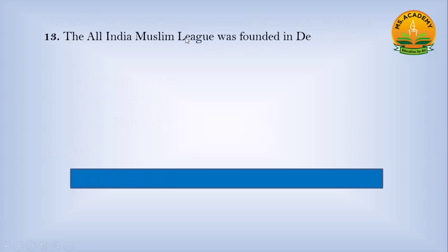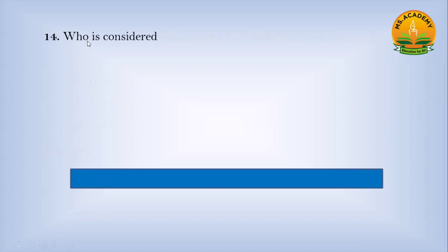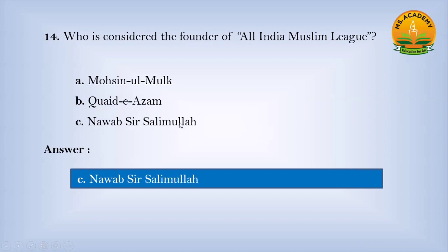The All India Muslim League was founded in December: Option A, 1908; Option B, 1913; Option C, 1906. Who is considered the founder of the All India Muslim League? Option A, Muslim Mulk; Option B, Quaid-e-Azam; Option C, Nawab Sir Salimullah. Answer: C — Nawab Sir Salimullah.